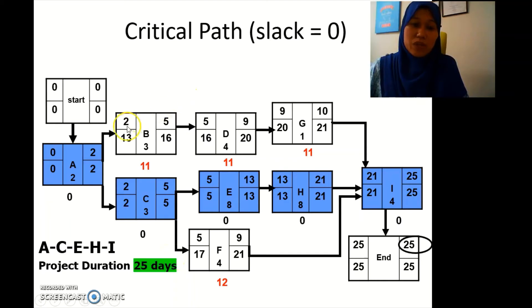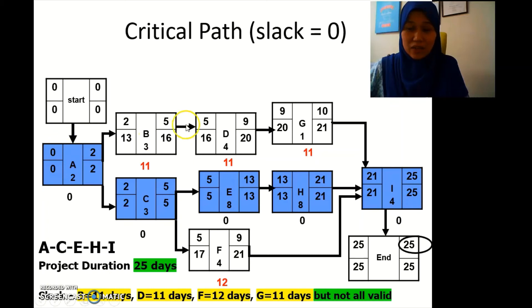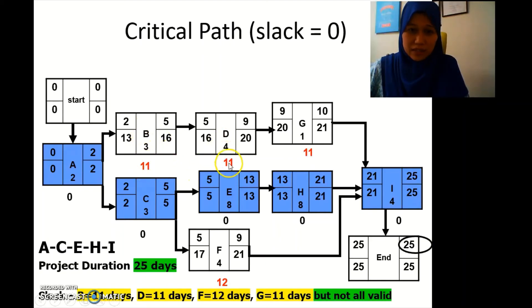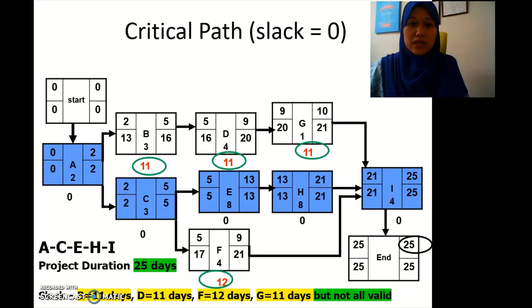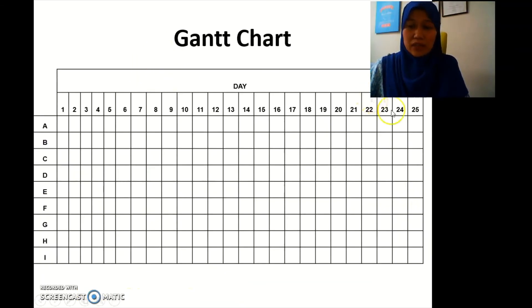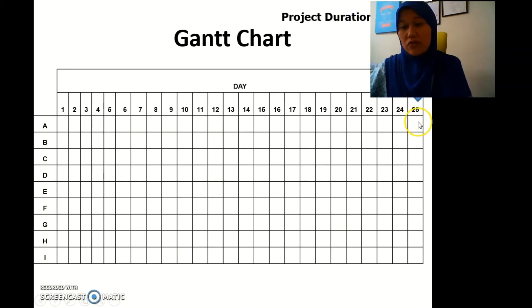Next we determine which activities have slack — meaning there's a balance when you subtract bottom from top. Those are B with 11, D with 11, G with 11, and F with 12. But not all slacks are valid — we have to check the validity of the slack using the Gantt chart. The Gantt chart spans 25 days.